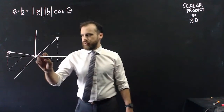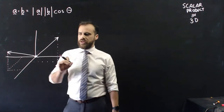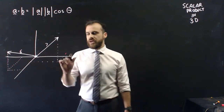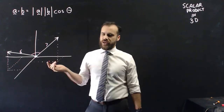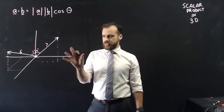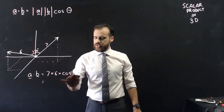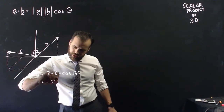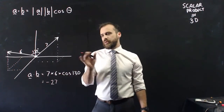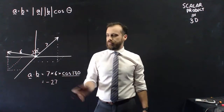So let's say I have one vector heading off here, sort of out of the page, and another vector off in that direction. I'm just going to give you two magnitudes — a magnitude of 7 and a magnitude of 6 — and the angle between the two vectors is 130 degrees. That's enough information to find the dot product: 7 times 6 times cos 130, which gives approximately negative 27. Dot products can be negative — cos 130 is in the second quadrant, so it's negative.